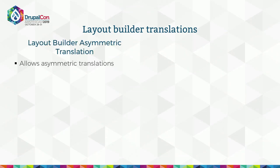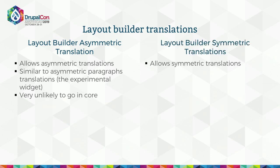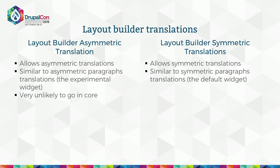Moving on to the topic: layout builder translations. There are two ways to achieve translations using layout builder, and neither of these two ways is in core today. The first module is layout builder asymmetric translations. As the name says, it supports asymmetric translations — very similar to how the experimental widget for paragraphs works. Something that everybody wants, but it's not a good practice to have a different look for a translated page, and it will most likely never go into core. On the other hand, we have another contributed module that is very likely to go into core very soon — it implements symmetric translation, where you can edit and translate content but you are not allowed to add or delete blocks.